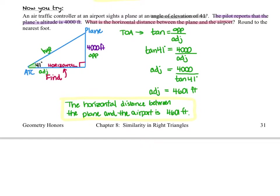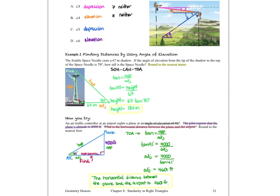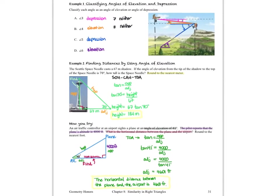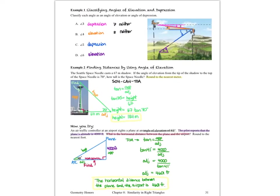We found that the horizontal distance between the plane and the airport is 4,601 feet. As always, if you have any questions about any of these, please bring them to class with you. Let's take a look at another example now.